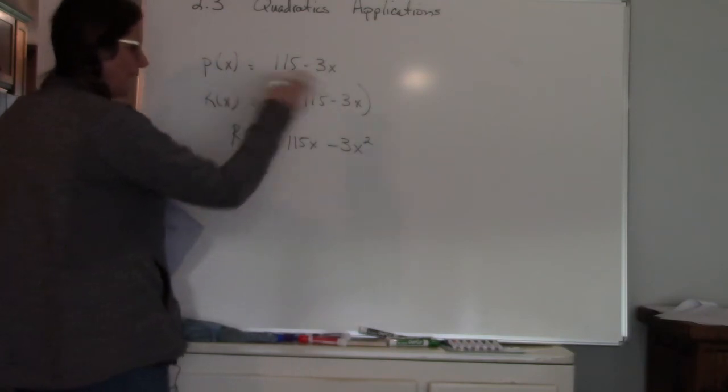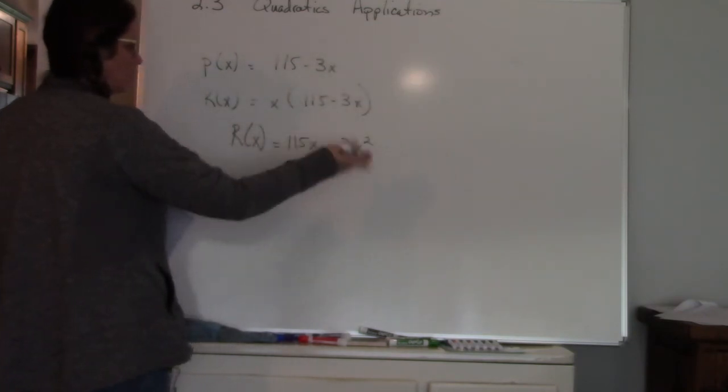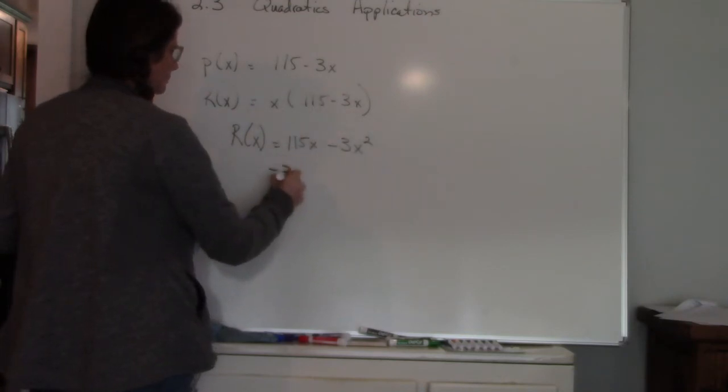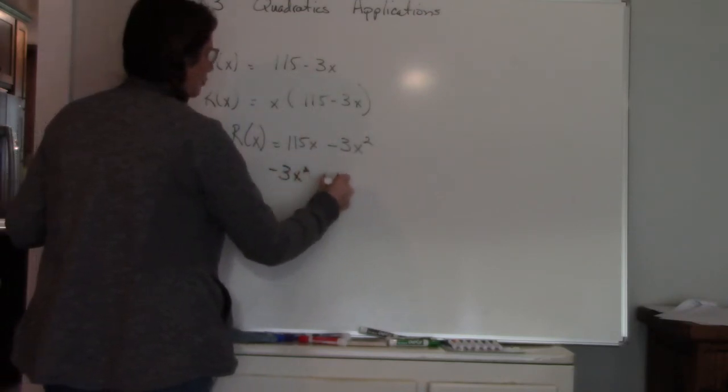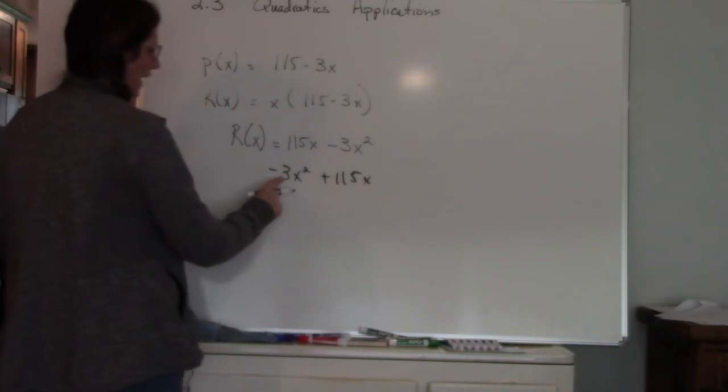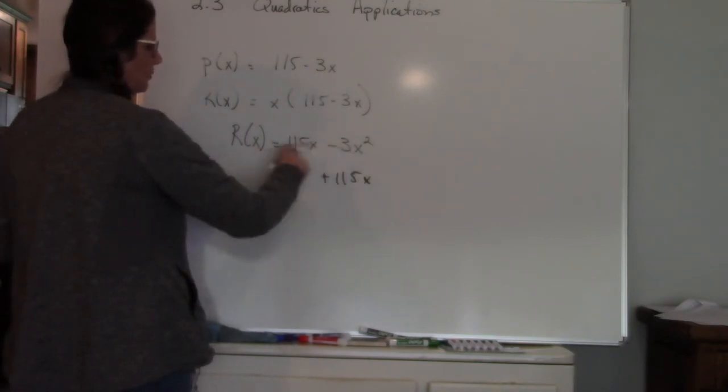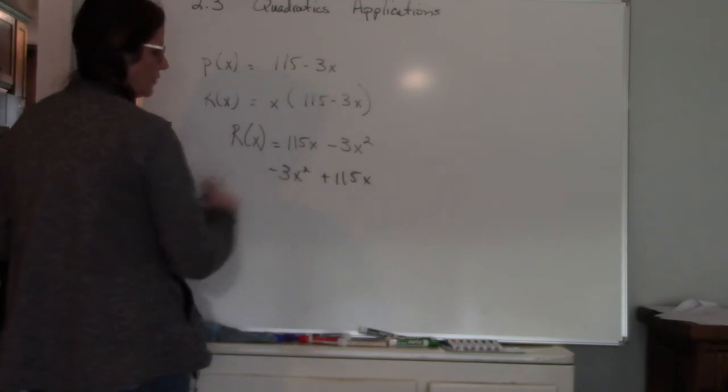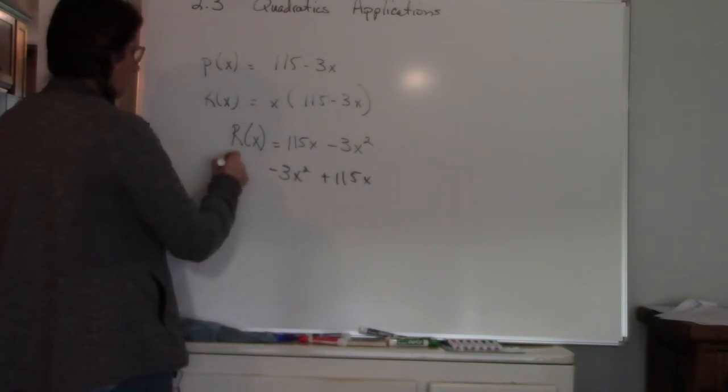So maximum goes with vertex so I'm going to use my vertex formula. I'm going to rearrange this so it is in descending order so that I have my A and my B. If I used it this way this would mess me up. A is always next to my X squared, B is always next to my X, so you have to rearrange it sometimes.